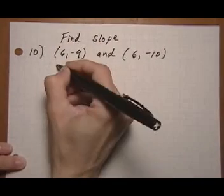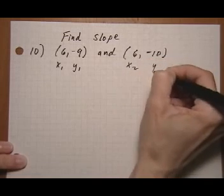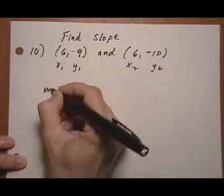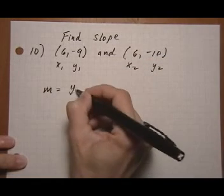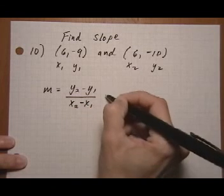So let's call this point number 1, x1, y1. Point number 2, x2, y2. And we'll use the slope formula, y2 minus y1 over x2 minus x1.